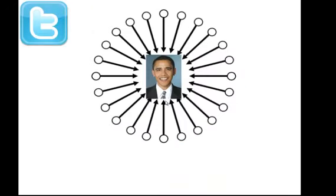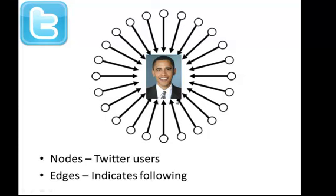Obama is one of the top tweeters, I think is what you'd say. So there's a lot of people following him, and it's only a single direction. Just because I'm following Obama doesn't mean Obama's following me. Here the nodes are the Twitter users, and the edges indicate following.